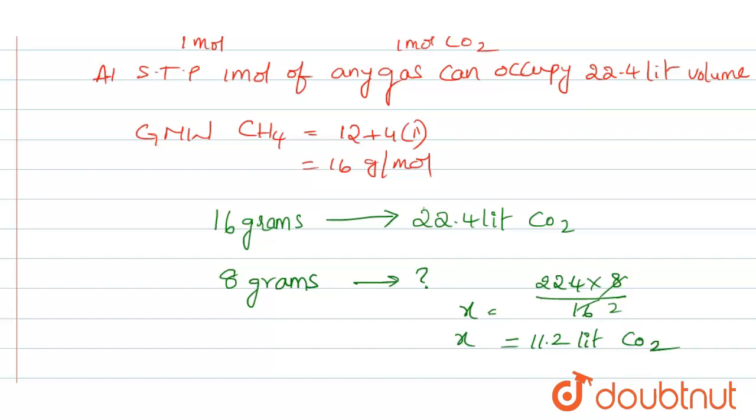So on burning 8 grams of methane, we can get 11.2 liters of CO2. Thank you.